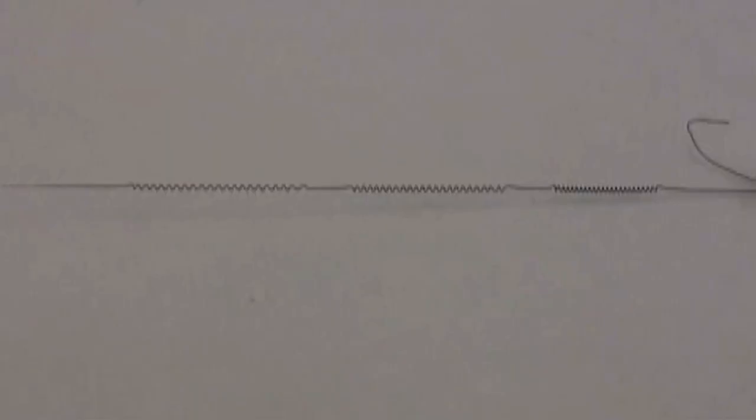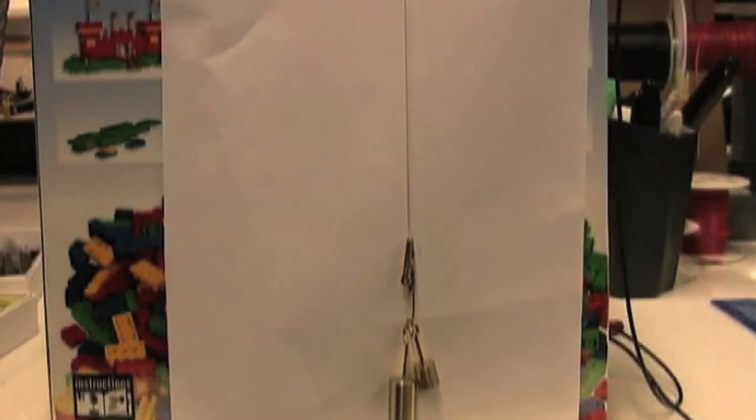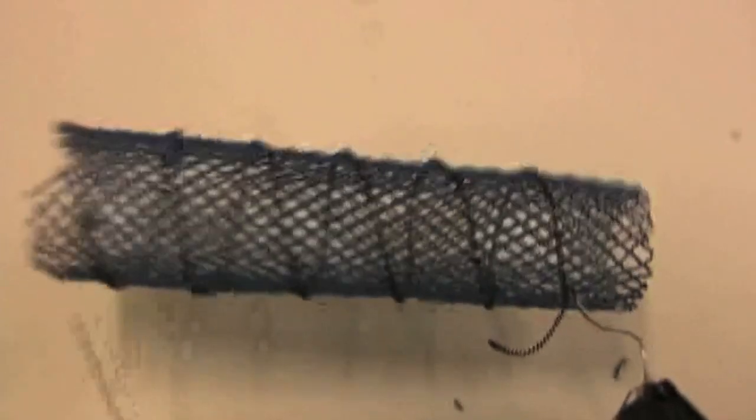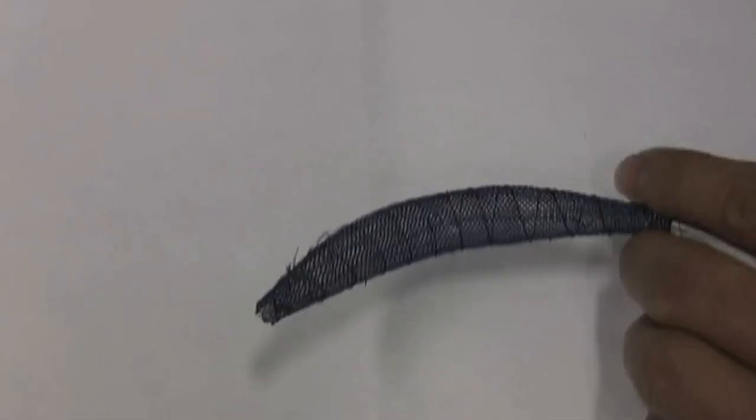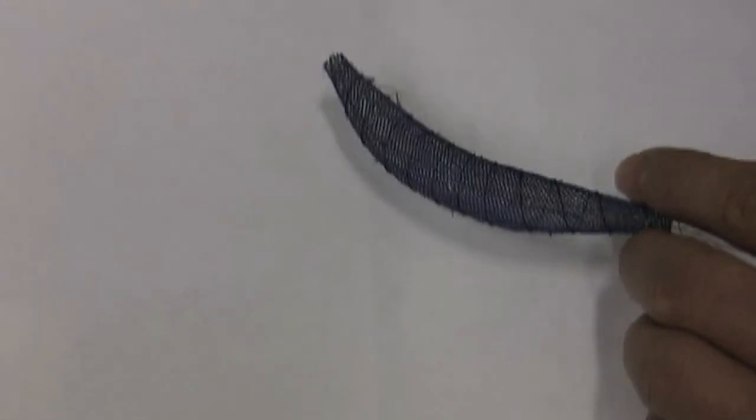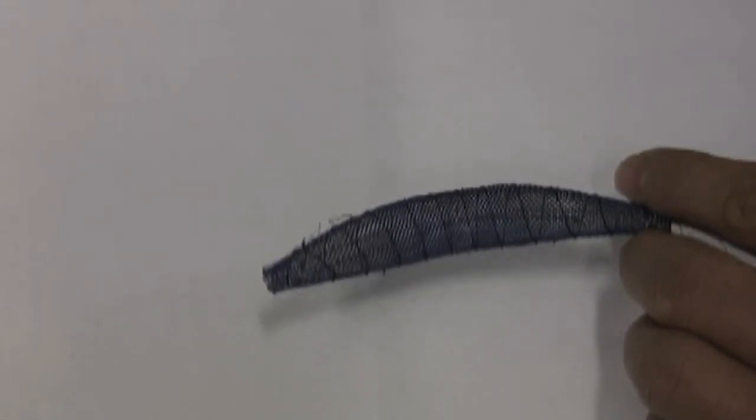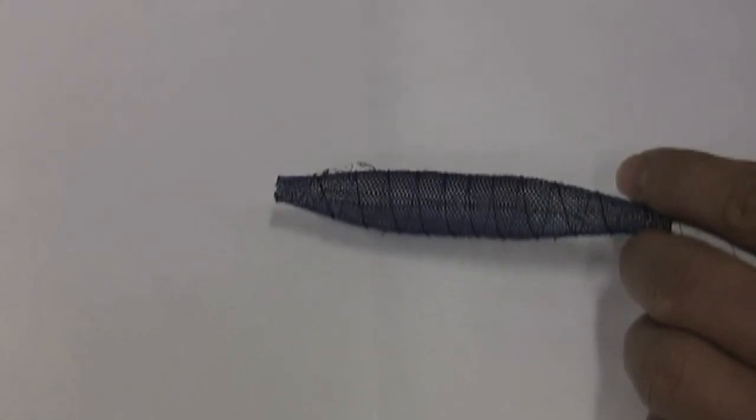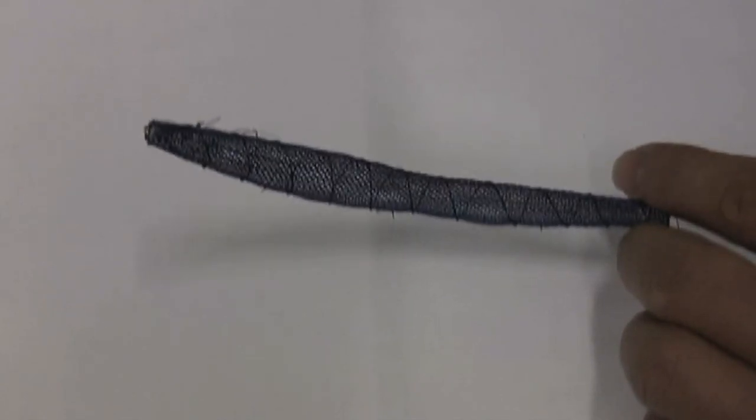Researchers created artificial muscle from wire made of nickel and titanium, a shape-memory alloy that stretches and contracts with heat. They wound the wire around the tube, creating segments like that in an earthworm. They then applied a small current to the wire segments, causing the wire to contract and squeeze the mesh tube, propelling the robot forward.